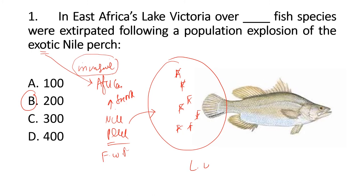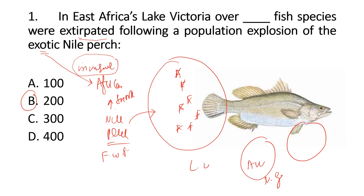The Nile perch basically attacked the local fishes and the local fishes were extirpated — so they had to end. For another example, there is an island called Guam and the continent is Australia. There is a snake called the Brown Tree Snake.